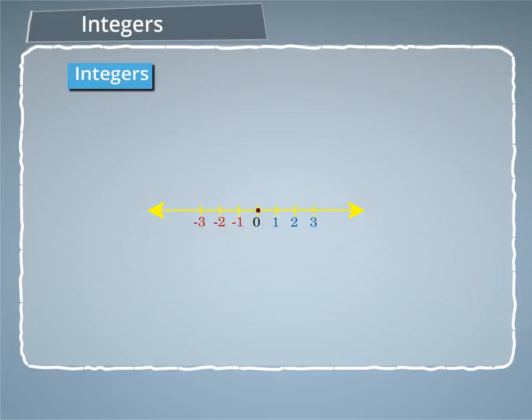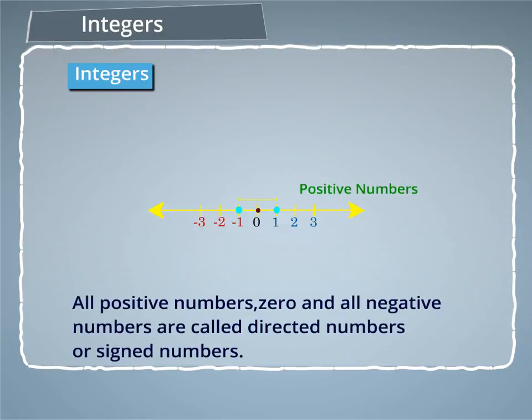The same is true for the rest of the points. Because of this property, all positive numbers, 0, and all negative numbers are called directed numbers or sign numbers.